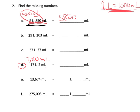...plus the two milliliters that we already had, so that's going to equal seventeen thousand two milliliters. Now going in reverse for E: if we have thirteen thousand six hundred seventy-four milliliters...